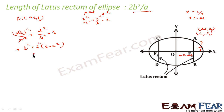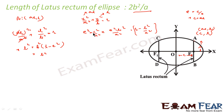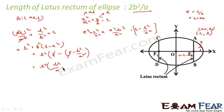Now, E² = C² / A² and C² = A² − B², so E² = 1 − B² / A². Substituting into L² = B²(1 − E²), we get L² = B² × (B² / A²) = B⁴ / A². Therefore L = B² / A.